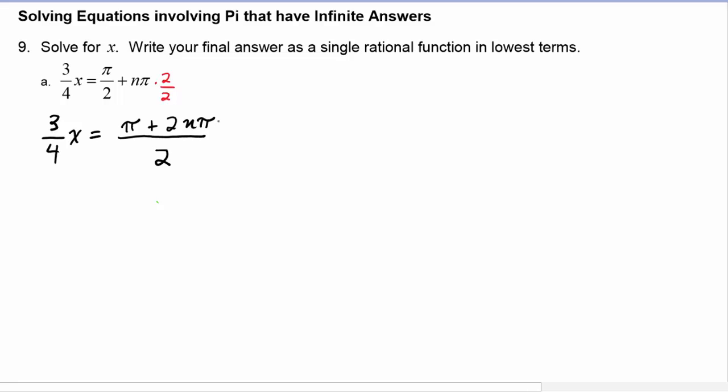Now we want to get the x by itself. Multiply both sides by the reciprocal, which would be four-thirds. And then we want to simplify.